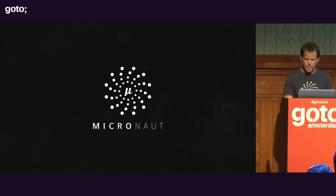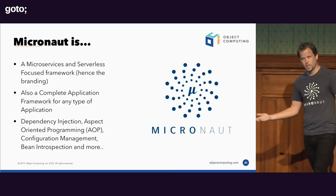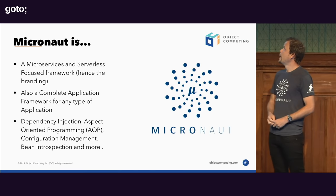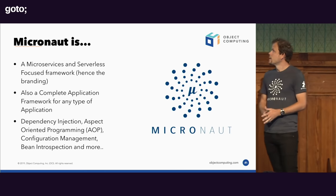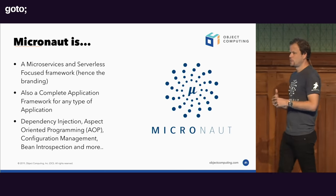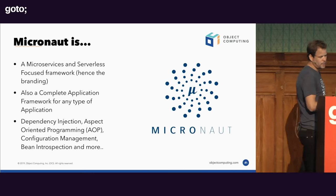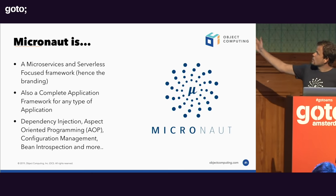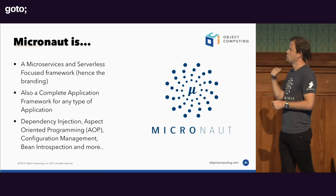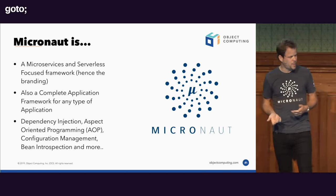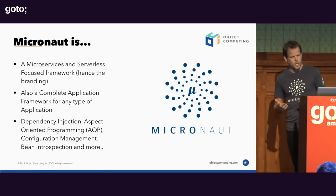Micronaut is a microservices and serverless focused framework — hence the name Micronaut. But it's also a complete application framework for any type of application, whether you're building a Kafka messenger microservice or a CLI application. It uses ahead-of-time compilation to do dependency injection, and takes it further than something like Dagger because it supports AOP, aspect-oriented programming, configuration management, bean introspection, and everything reflection-free as much as possible.